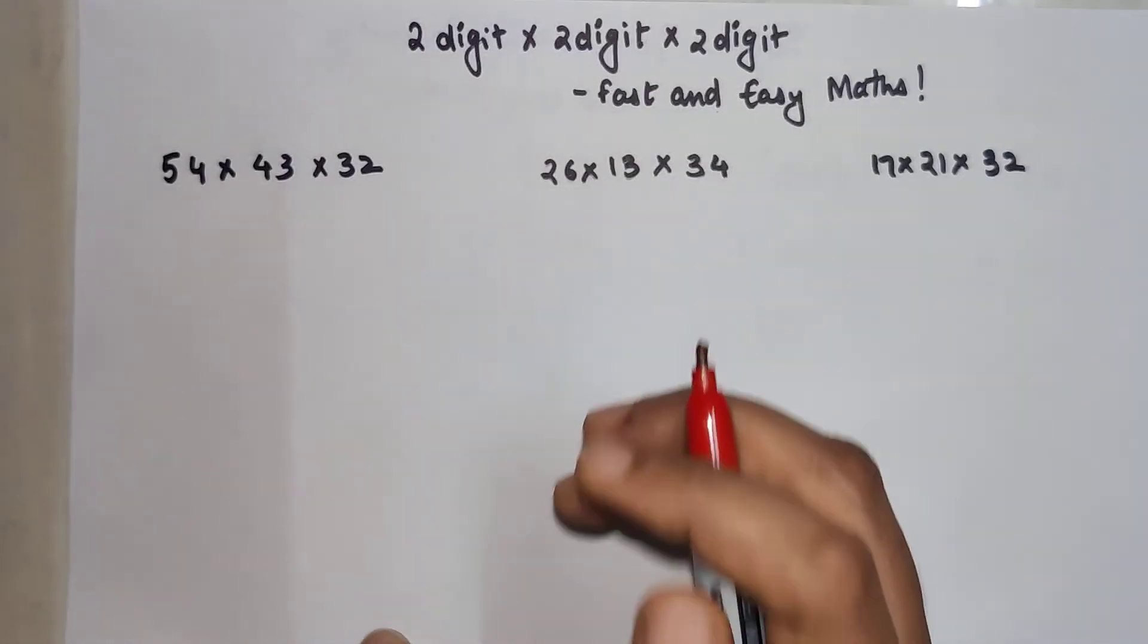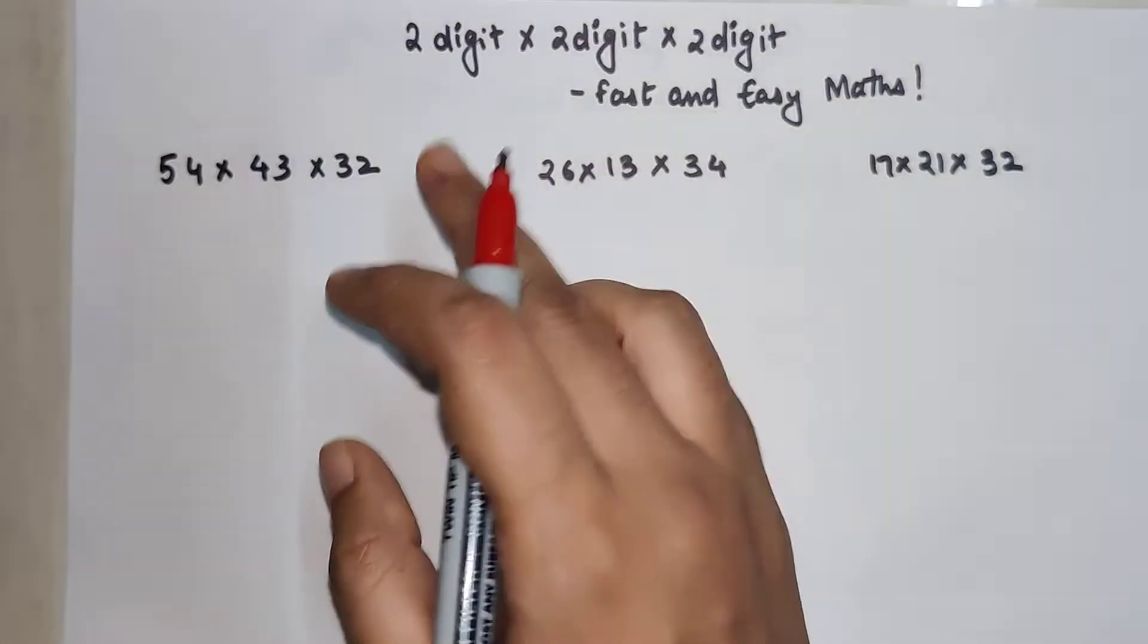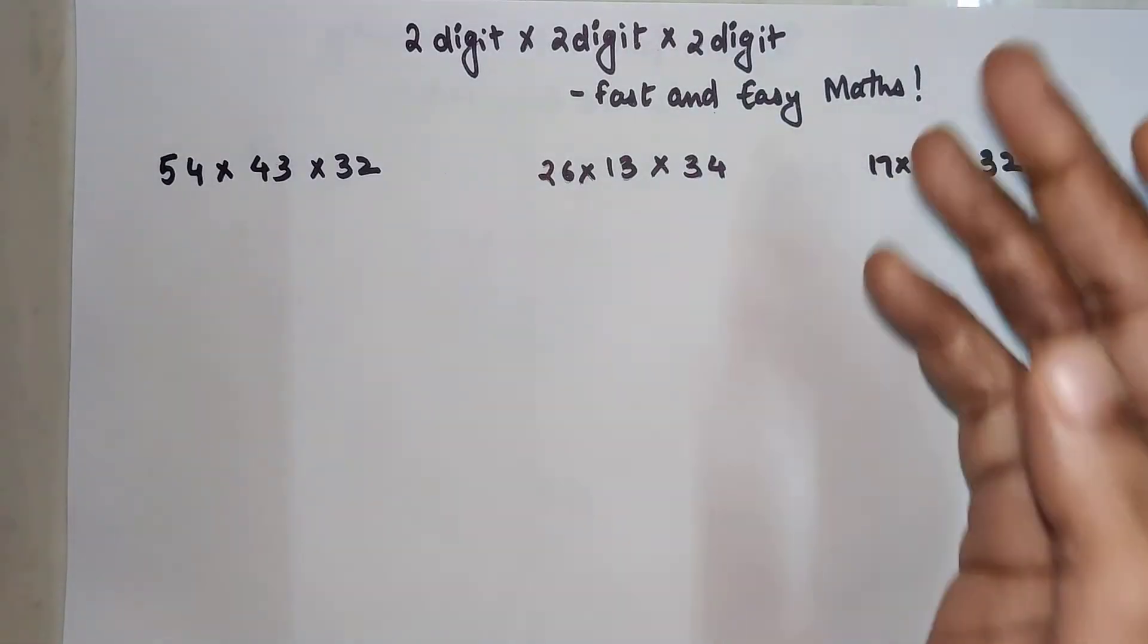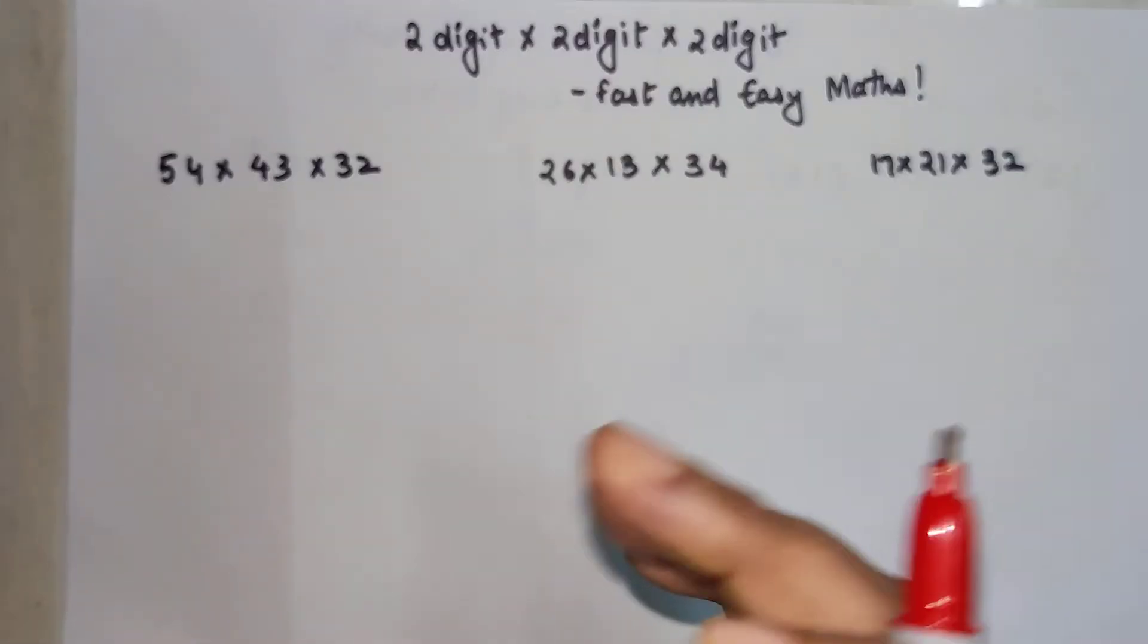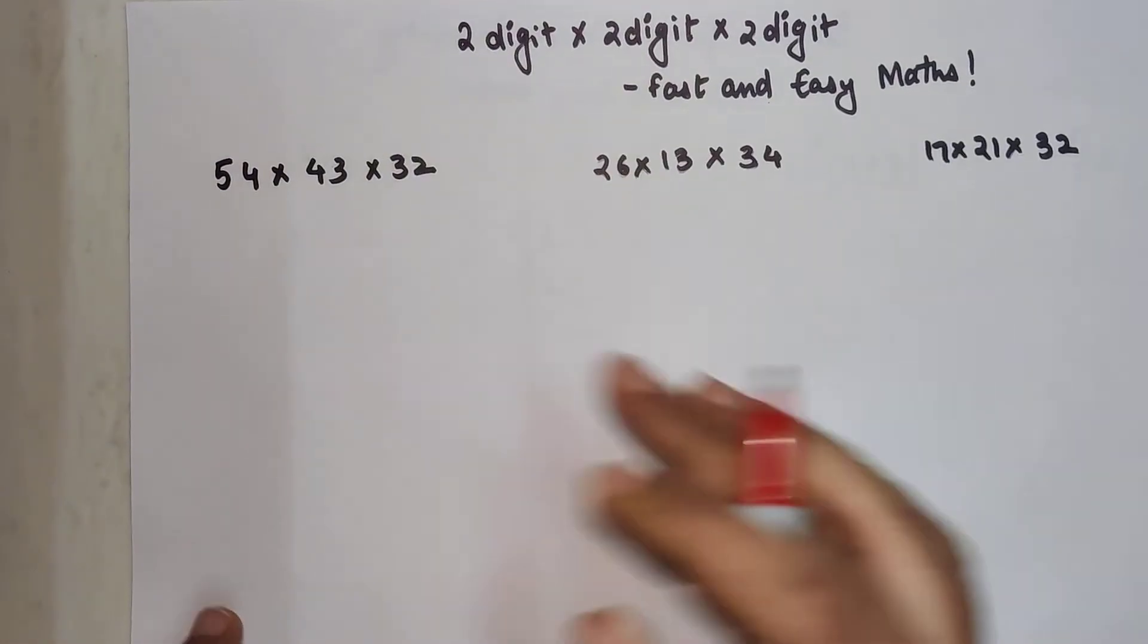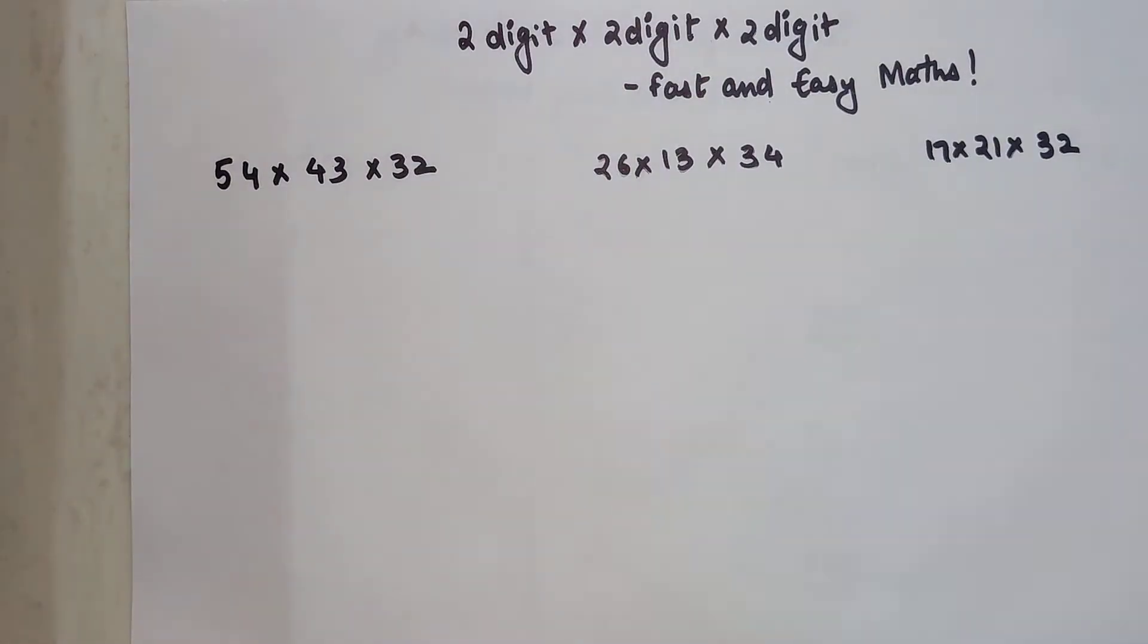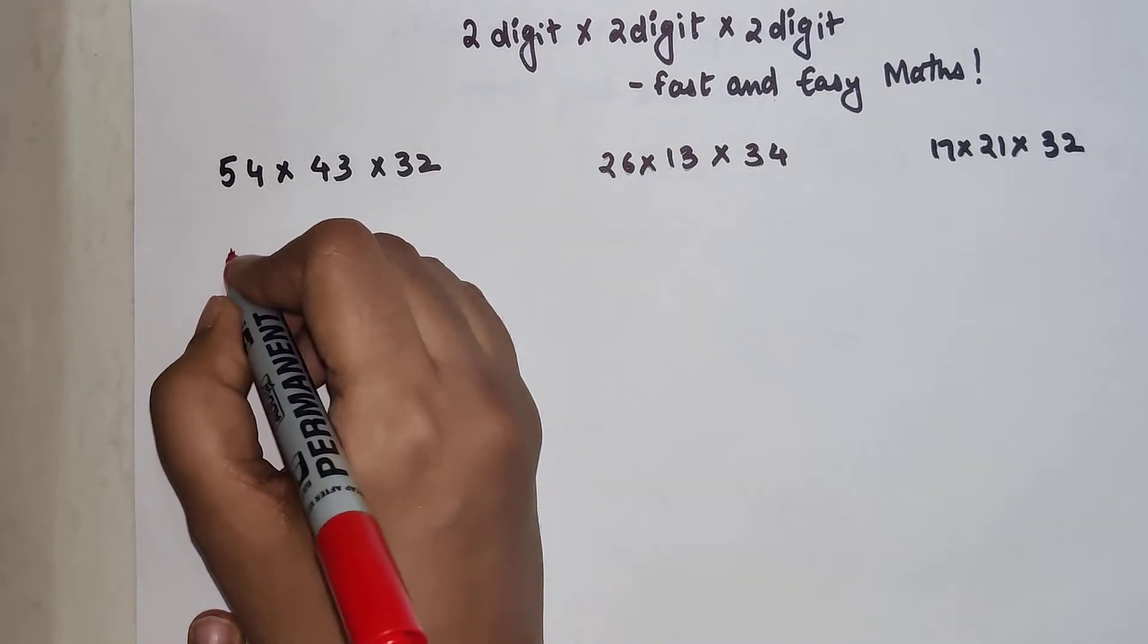So students, today I am going to show you a trick with which you can multiply 2 digit into 2 digit into another 2 digit in seconds. You really do not have to worry about doing the whole lengthy process. It's very simple.